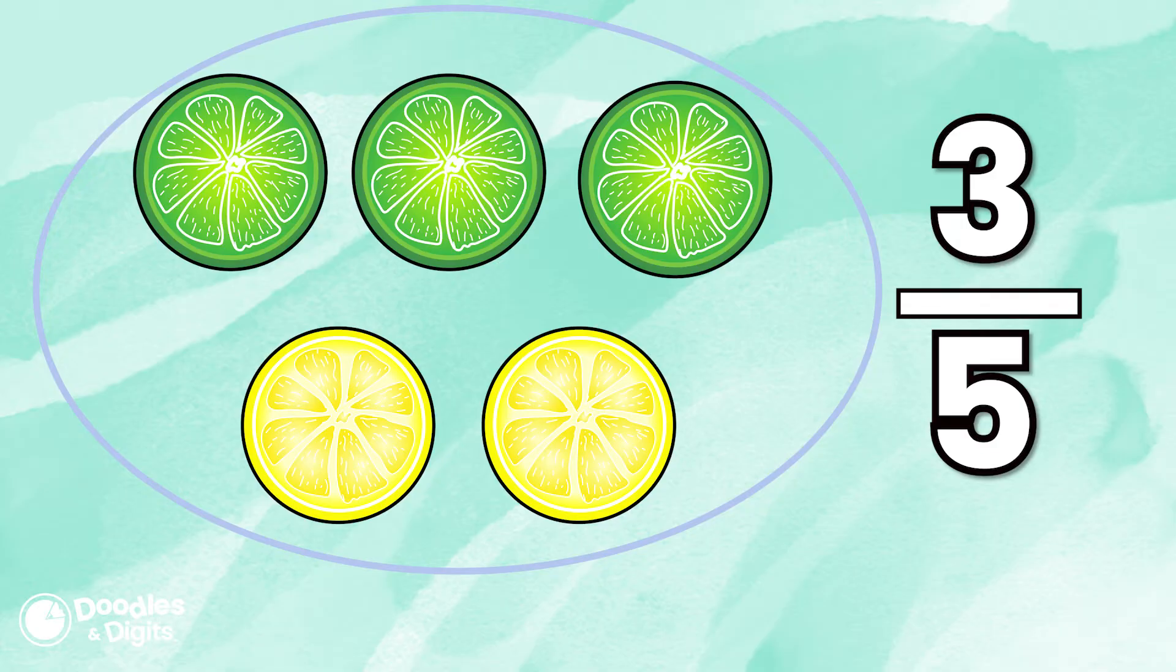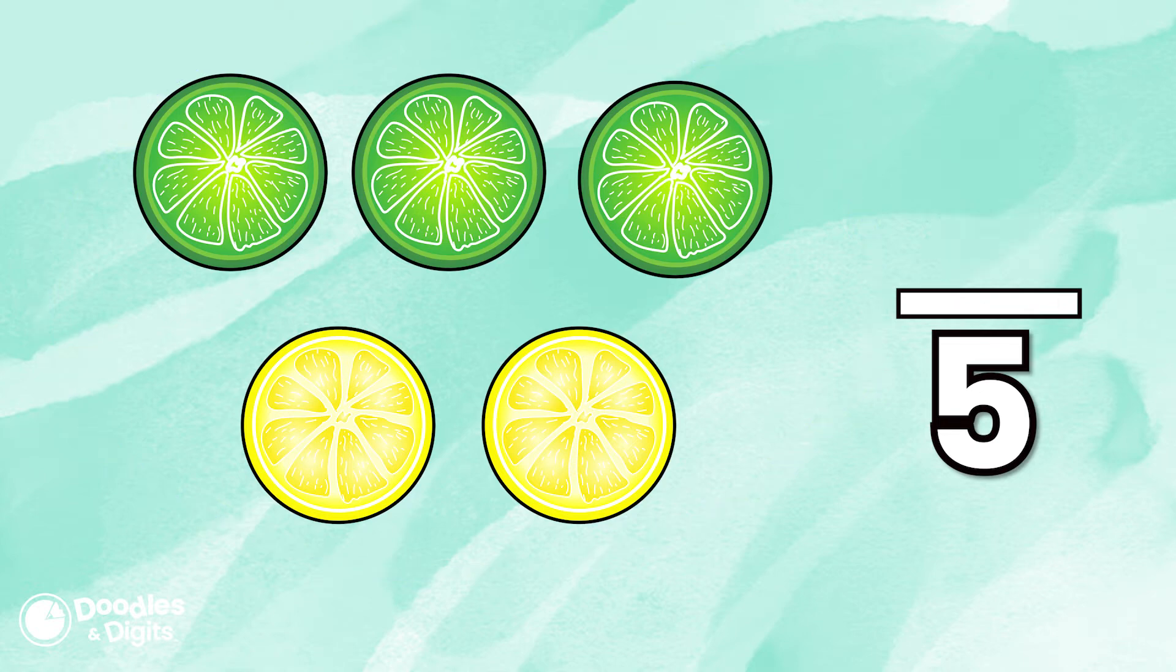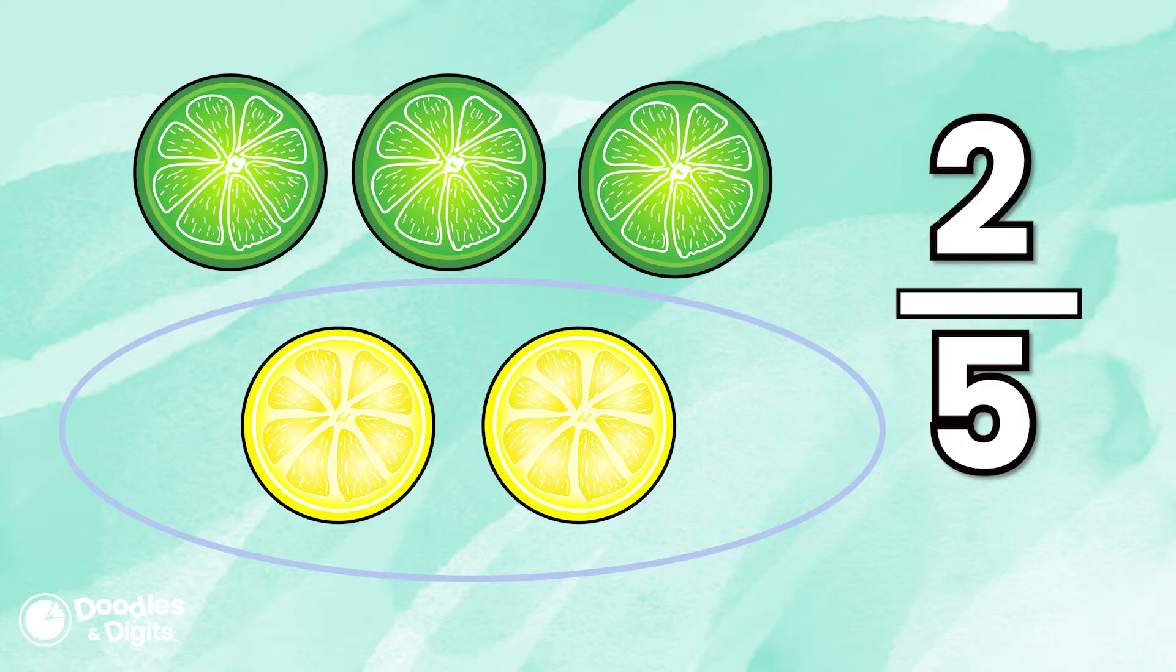You could also look at it the other way. You could say two of the group is lemons. So, two out of the five are lemons.